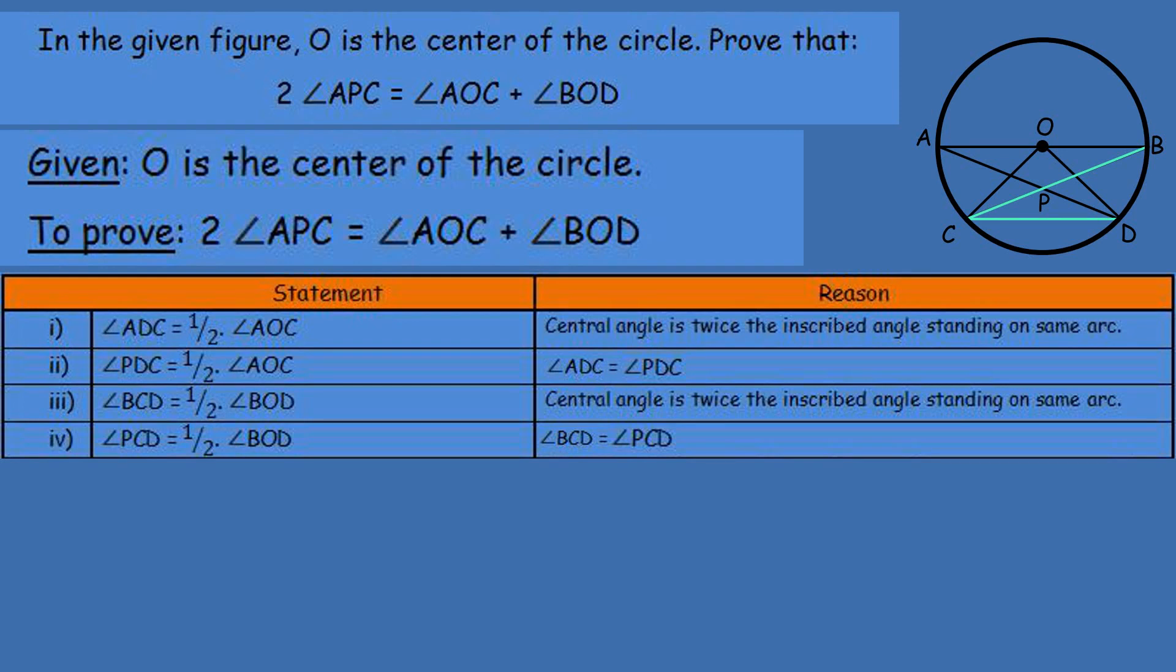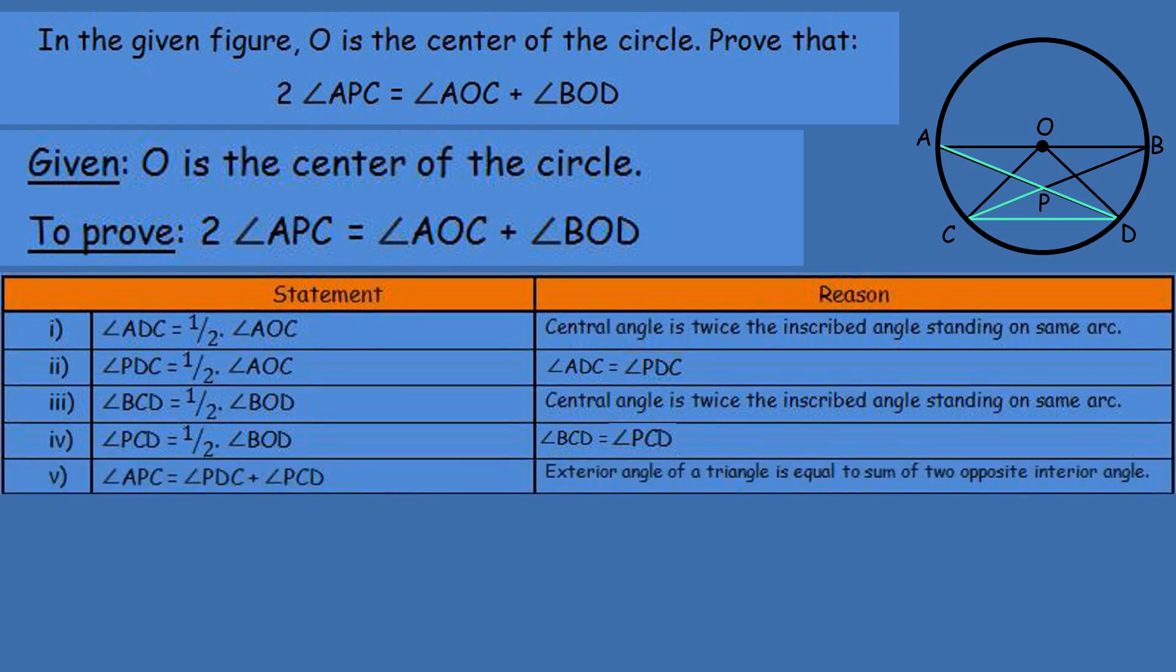Now, consider triangle CDP. Consider this triangle CDP. The DP side extend, and that is the exterior angle formed. Angle APC, that is the exterior angle formed by triangle CDP. When angle APC is the exterior angle of the triangle PCD when we extend side DP towards A point, right? So we can write angle APC